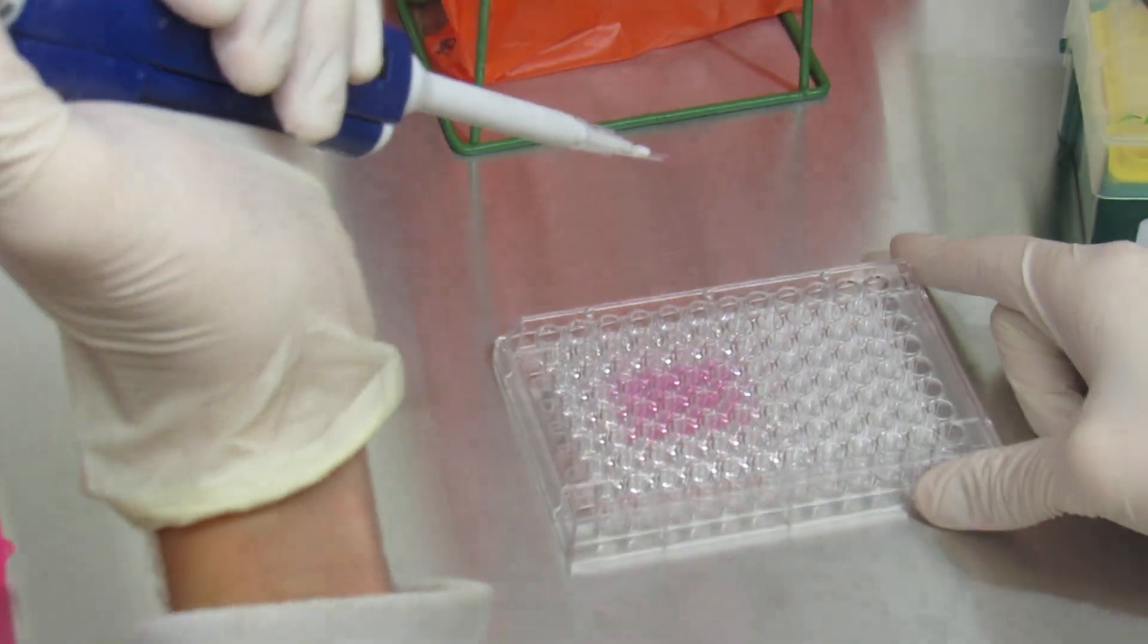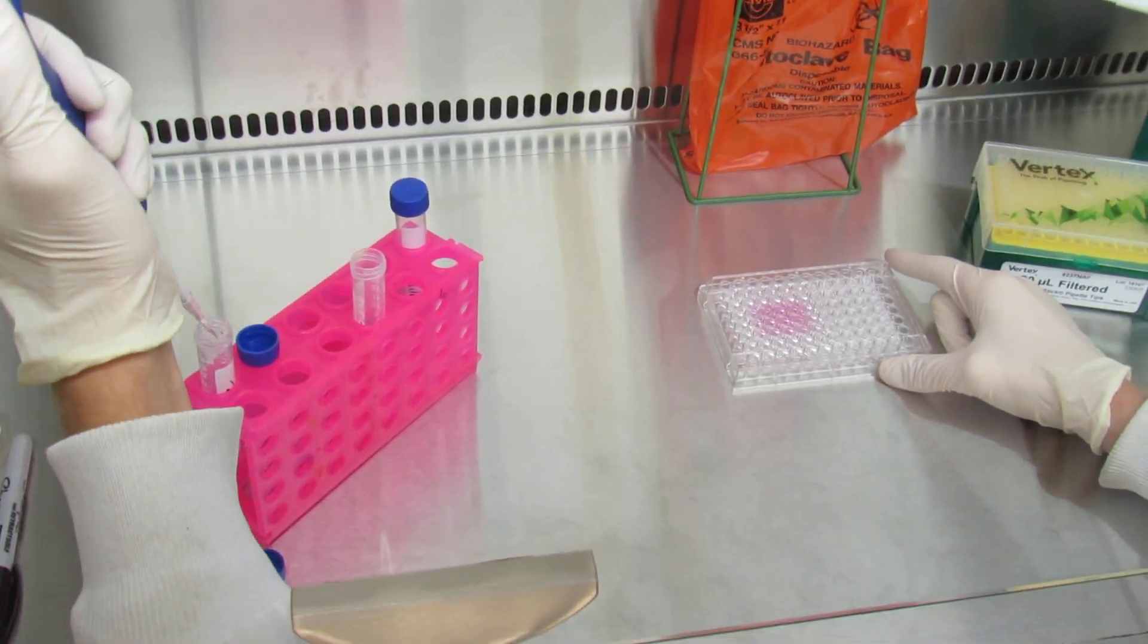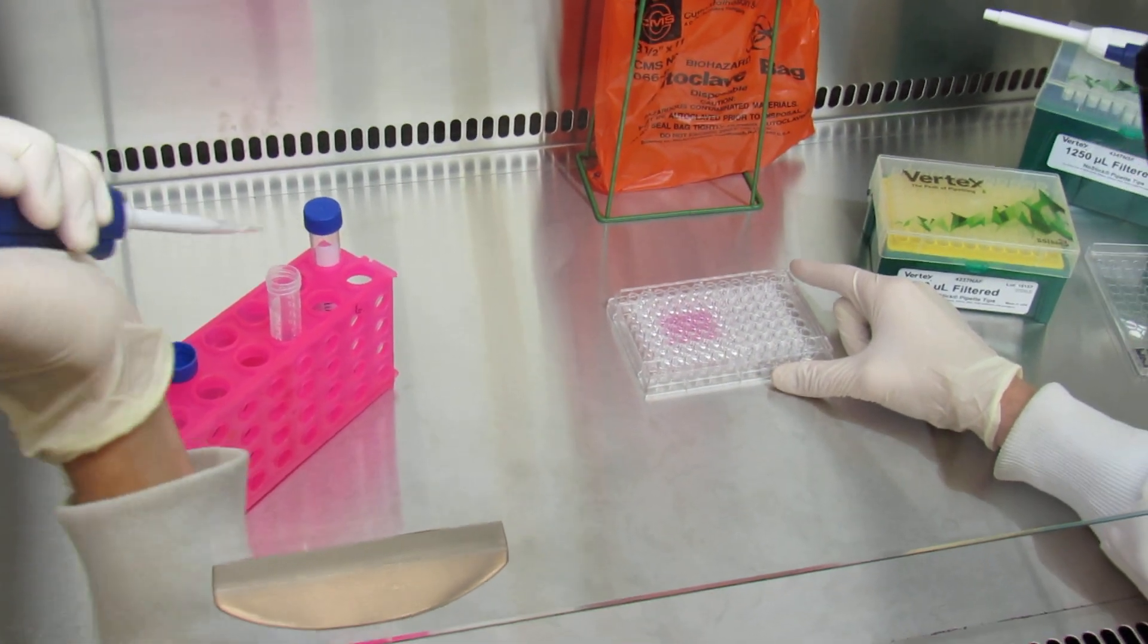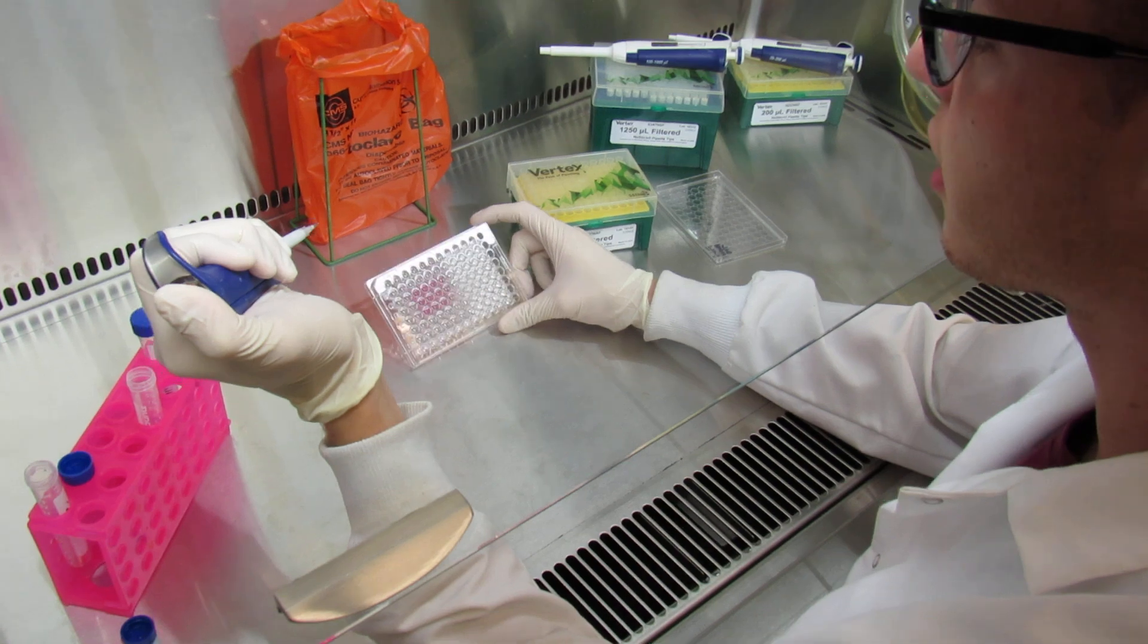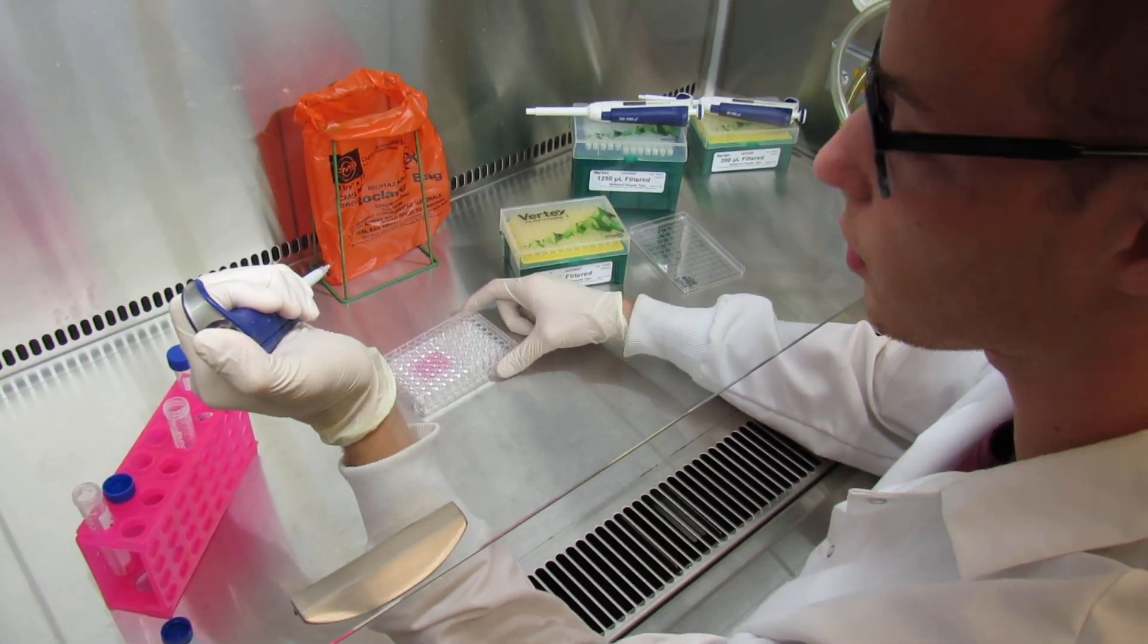Take the last 10 microliters from that last well and put it in the waste. You're going to repeat the step for all of your samples, so you're going to successfully serially dilute your samples.